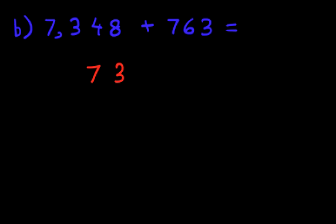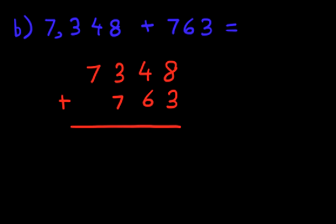Now you know the routine by now. The first stage is to write this question down in the vertical format. So let's do that over here. 7,348 plus 763. We're not going to label the columns. We're just going to go ahead with the addition. So let's start with the first column. That's this column over here. The units column.